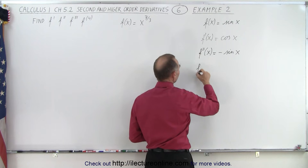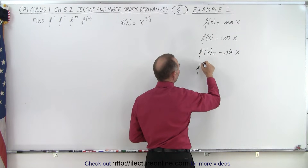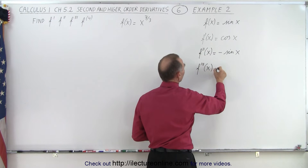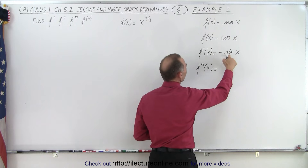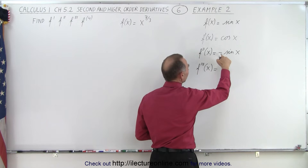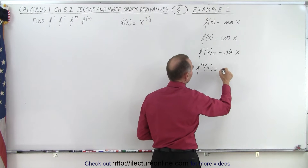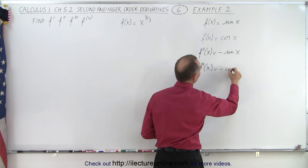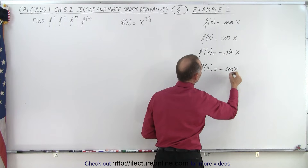If I now take the third derivative, f triple prime of x, the derivative of the sine is the cosine — I still have a negative — so that's minus the cosine of x.